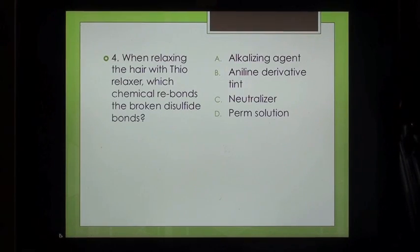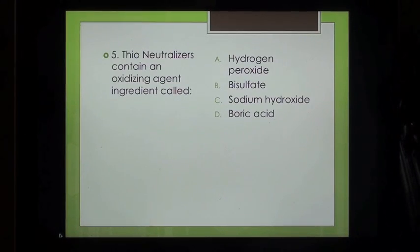Question 4: When relaxing the hair with thio relaxer, which chemical rebonds the broken disulfide bonds? A. Alkalizing Agent, B. Aniline Derivative Tint, C. Neutralizer, D. Perm Solution.